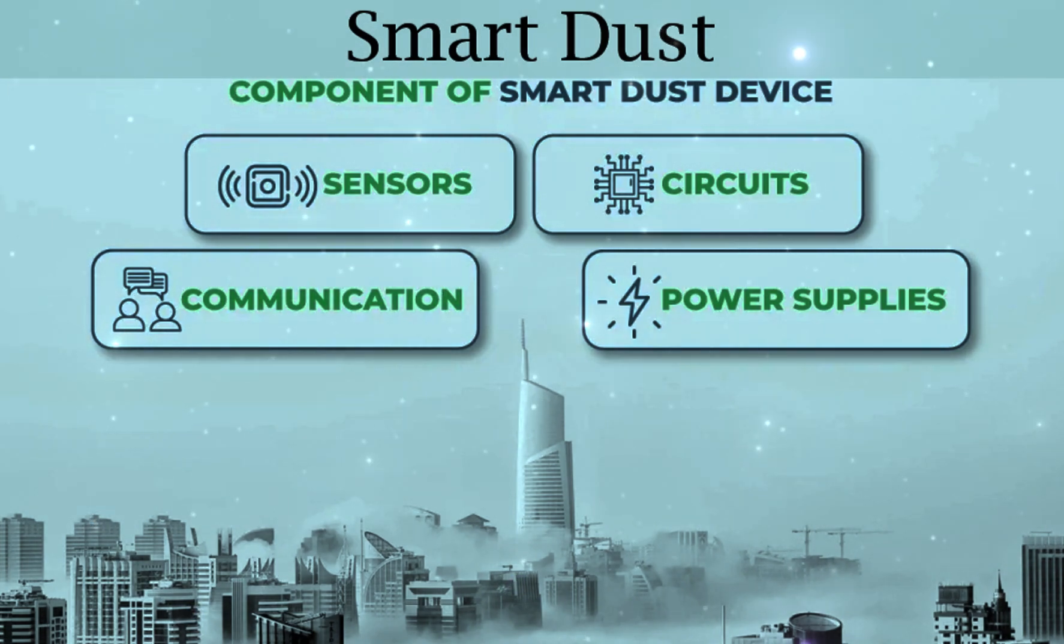Practical applications of smart dust: The potential of smart dust to collect information about any environment in incredible detail could impact plenty of things in a variety of industries from safety to compliance to productivity. It's like multiplying the internet of things technology millions or billions of times over. Here are just some of the ways it might be used.